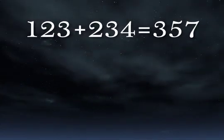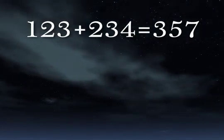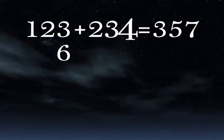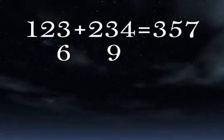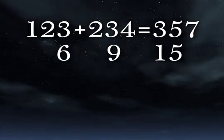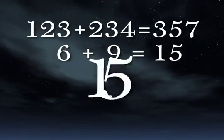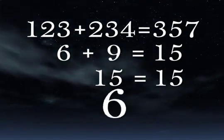Take a look at this problem. 1 plus 2 plus 3 is 6. 2 plus 3 plus 4 is 9. And 3 plus 5 plus 7 is 15. 6 plus 9 is 15. So now we have 15 equals 15. Digit summing both sides of that, we get 6 equals 6.